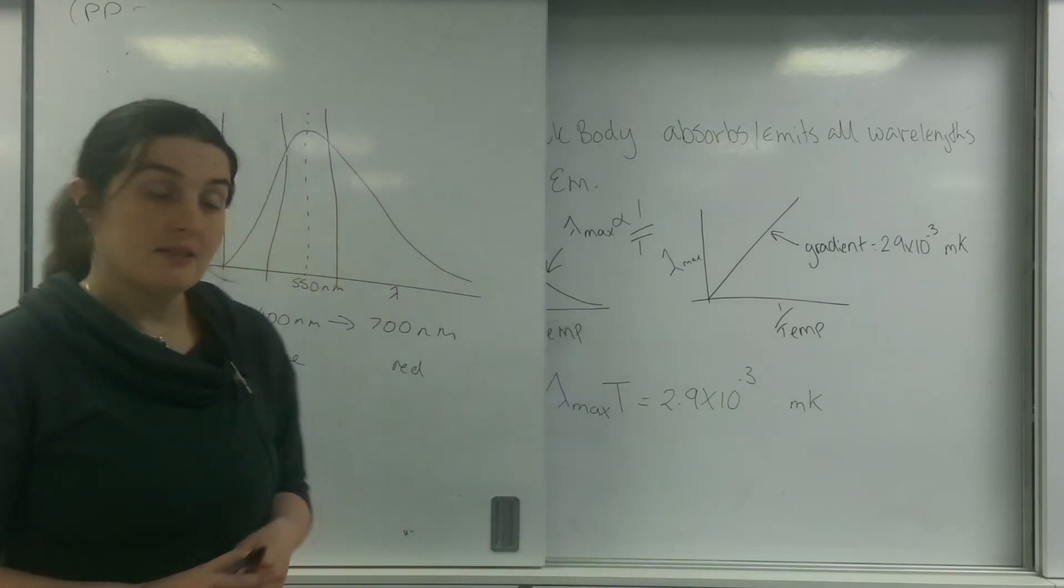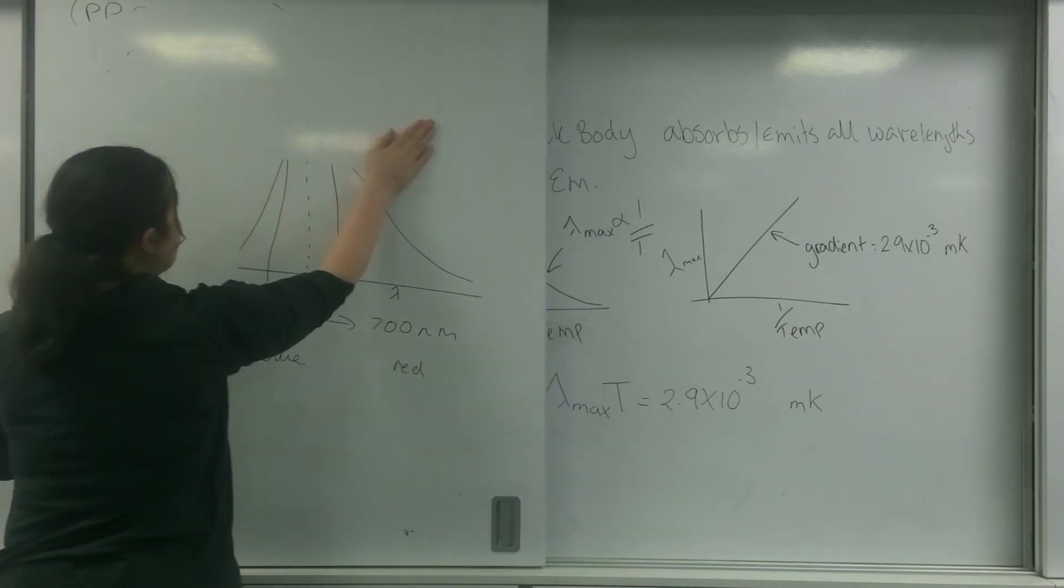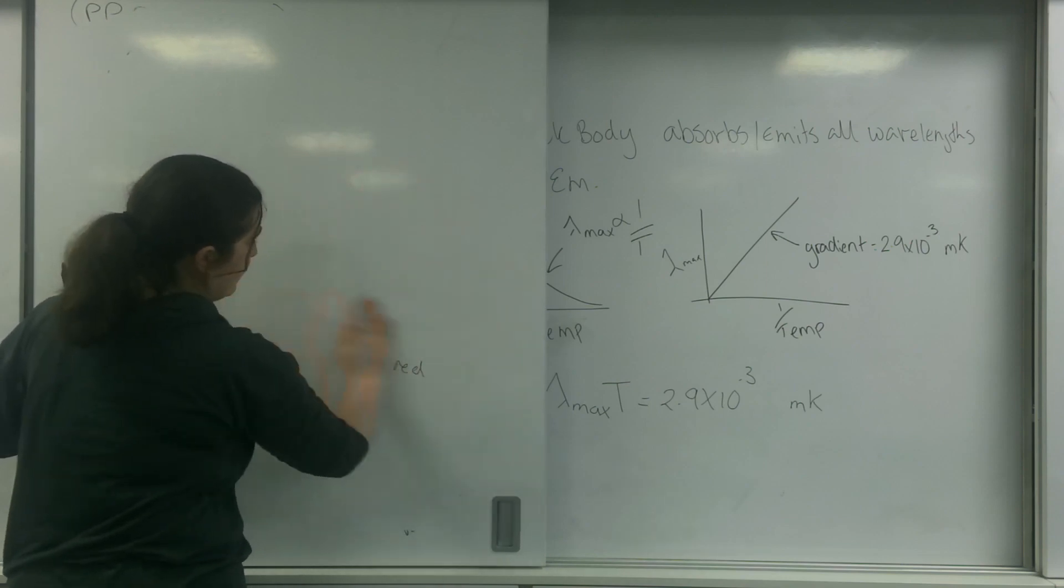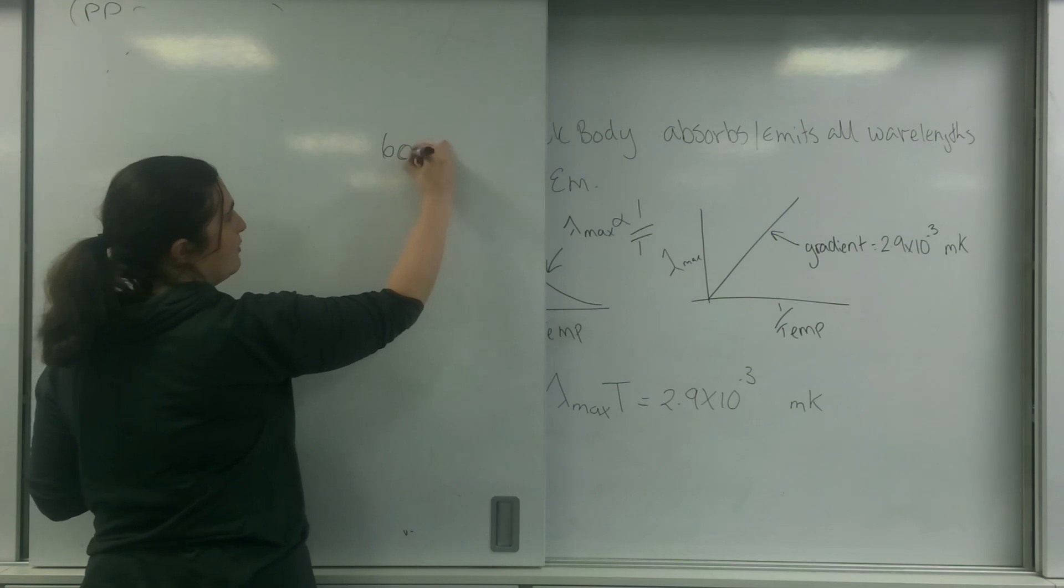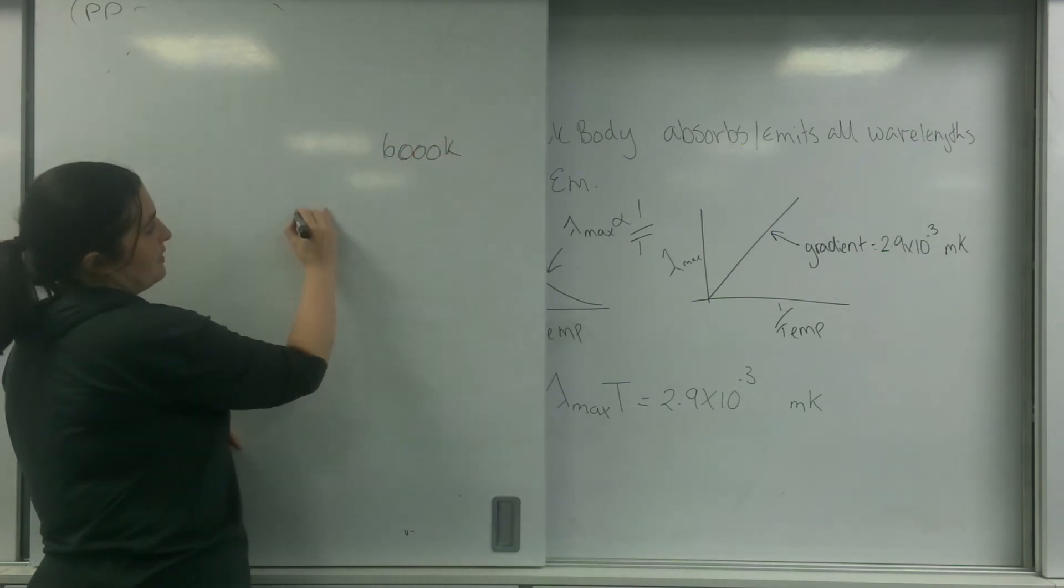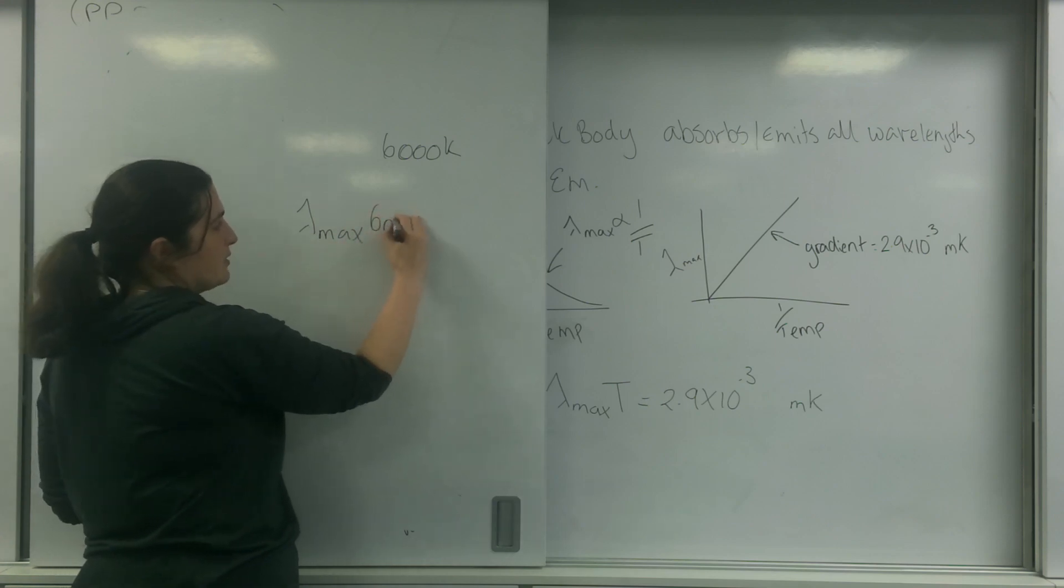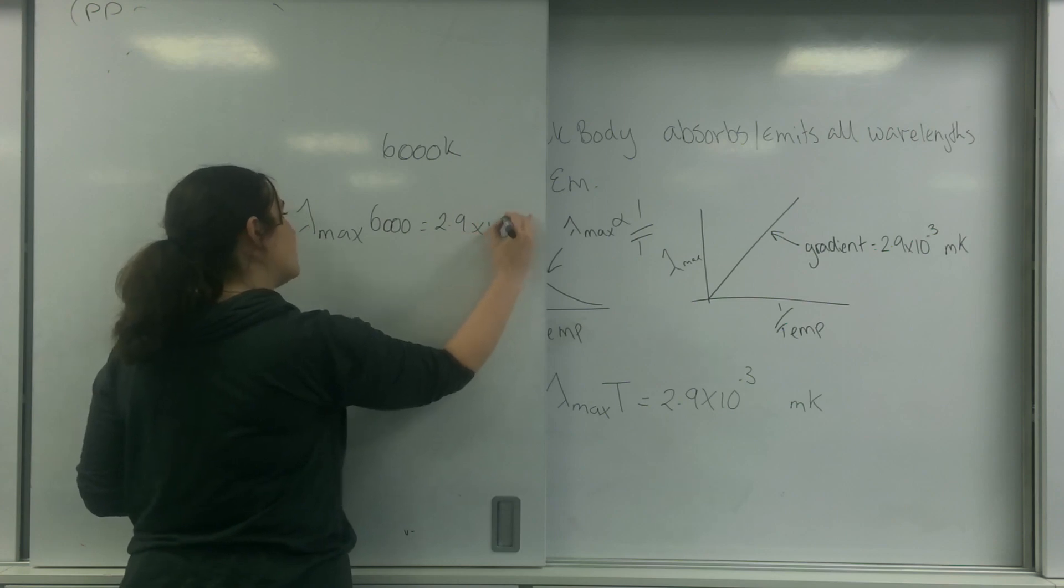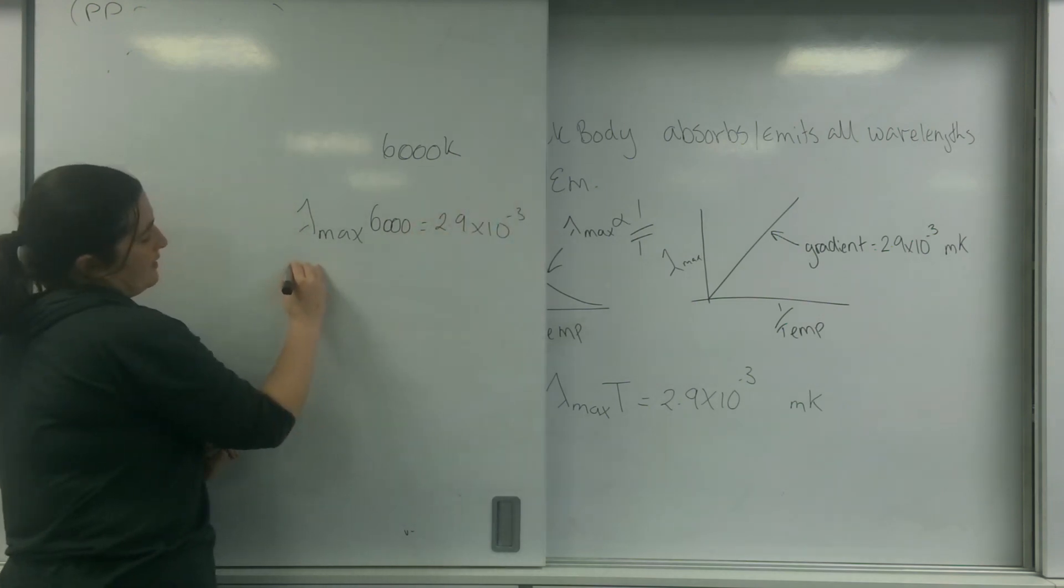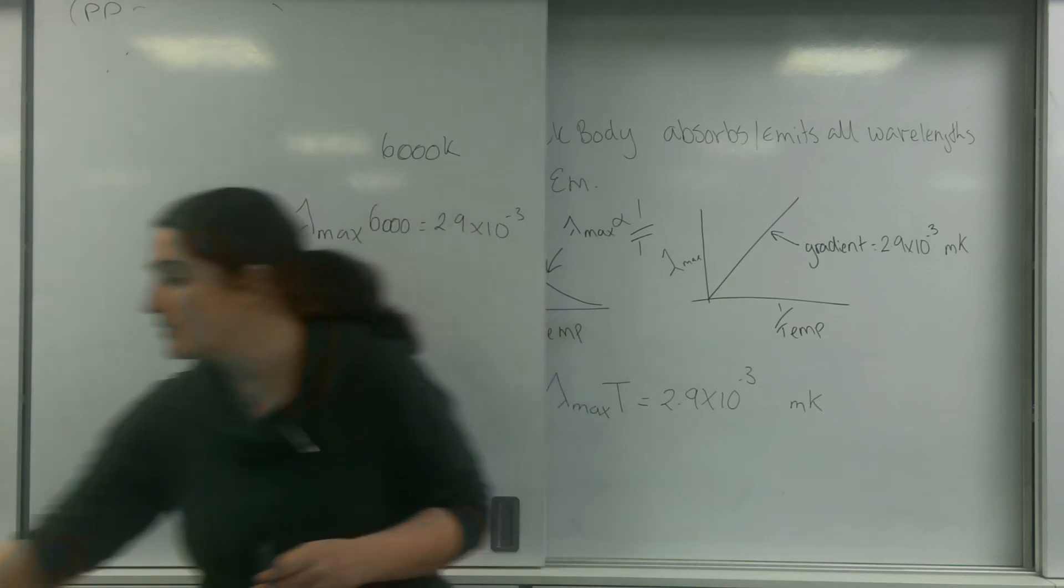So let's actually look at what our sun does. Let's see if we can relate any of the numbers. Our sun is approximately about 6,000 Kelvin. So let's use Wien's Law. So lambda max times by 6,000 equals 2.9 times 10 to the minus 3. So lambda max is going to be 2.9 times 10 to the minus 3 divided by 6,000.